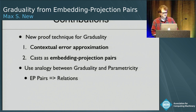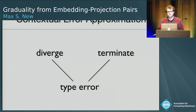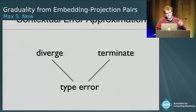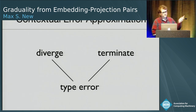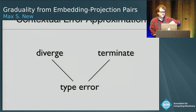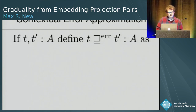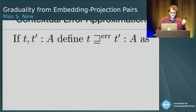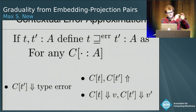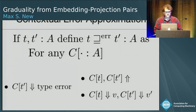We can think of this graduality property as defining an ordering on the types of effects a program can have. At the bottom of the ordering is the type error, and then diverging and termination are above it. This is different from the usual notion of ordering on effects in, for example, partial correctness, where divergence would be the least element. There's an easy way to lift an ordering on effects to an ordering on programs using context.